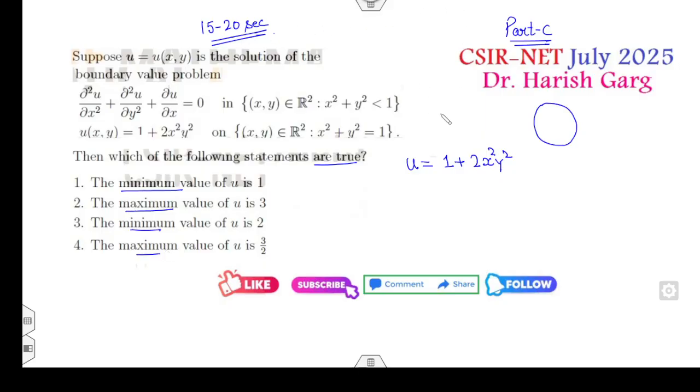Can you get the answer in 15 seconds? Of course you can because it's a boundary, it's closed. So the maximum and minimum occur always on the boundaries. Although there is no boundary but if you look for this curve...